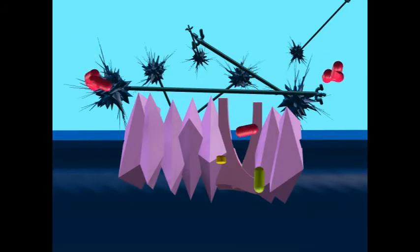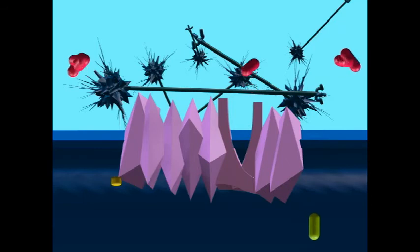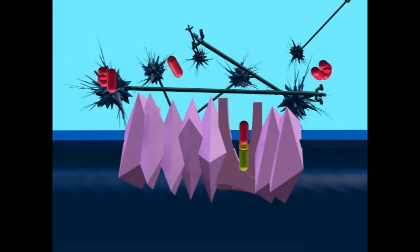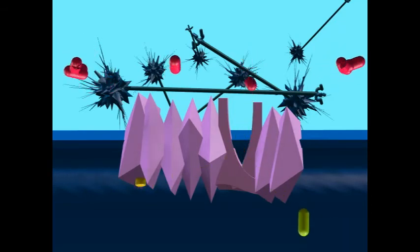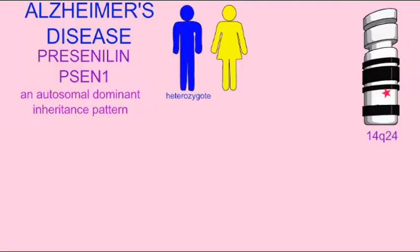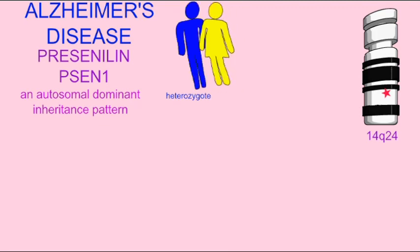This is inherited as an autosomal dominant trait. So, one needs only receive one allele for the mutant presenilin-1 to develop these plaques and then develop Alzheimer's disease.